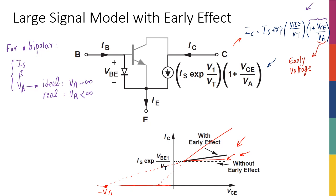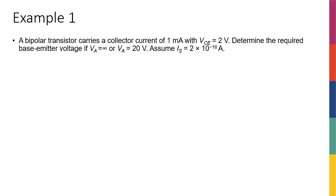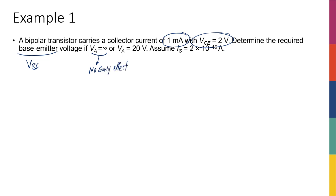Based on this expression, the bigger the VA or the smaller the VCE, the smaller the impact of collector-emitter voltage on the current. Let's do a quick example to see how Early Effect changes the operating point of our transistor. We have a bipolar transistor carrying a collector current of 1 milliamp, with a given VCE, and we want to determine the required base-emitter voltage VBE — first when VA is infinity (no Early Effect) and then when VA is 20 volts.